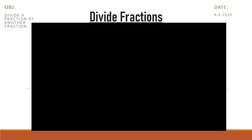Let's try another example. We can find 7 ninths divided by 1 half. First, rewrite the problem using multiplication and the reciprocal of the divisor. The reciprocal of 1 half is 2 over 1.